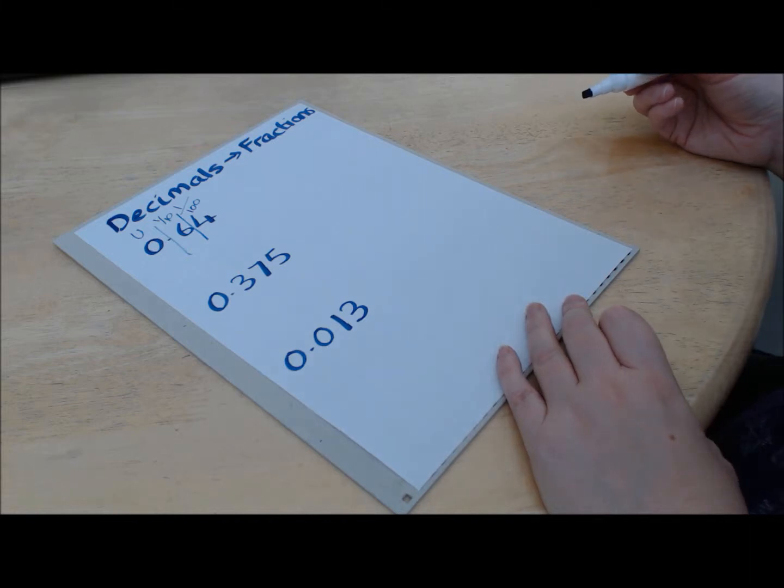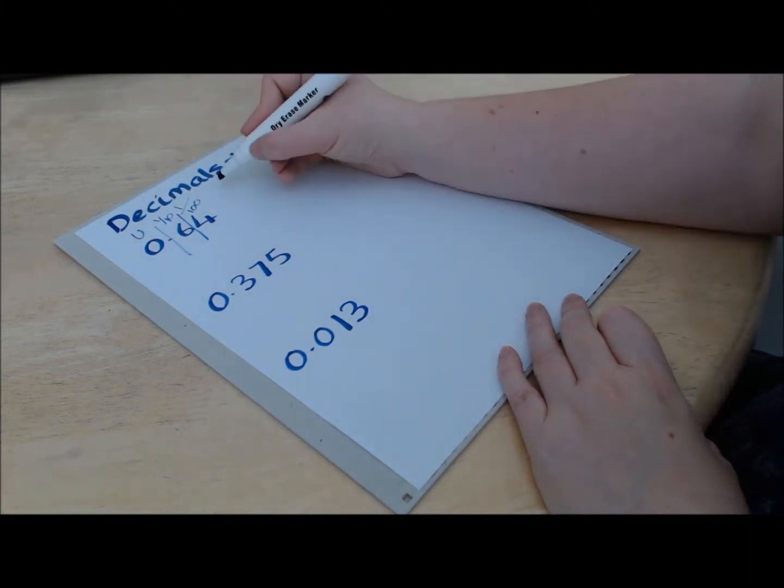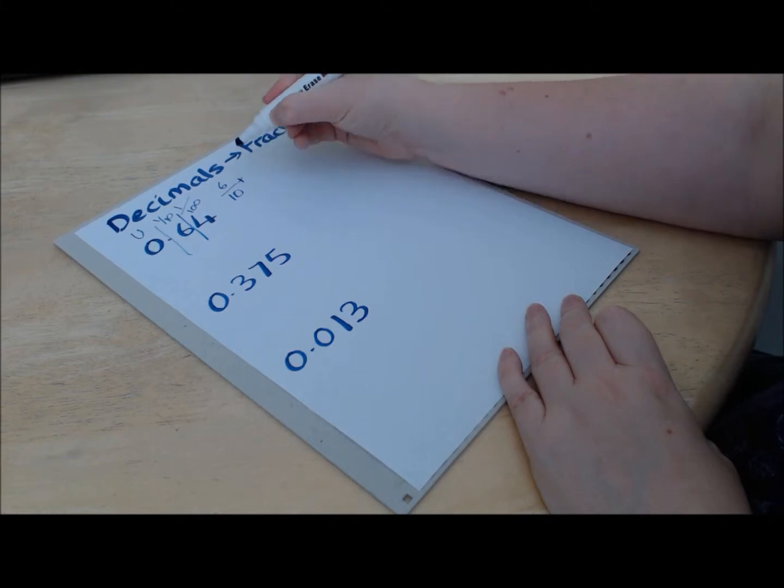OK, so what we've got here is six tenths plus four hundredths.